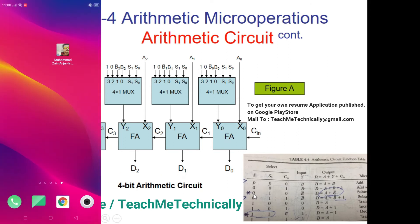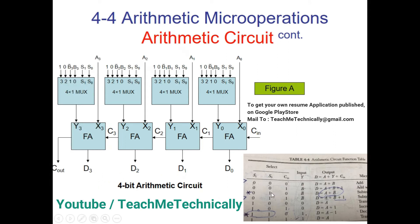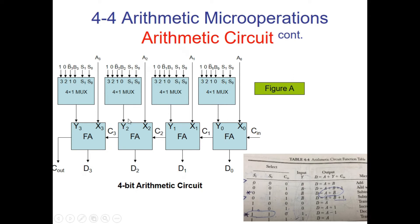Now take another example: selection bits are 0 1 and carry input is 0. For selection 0 1, the MUX passes the complemented value of B — B0 complement, B1 complement, B2 complement, and B3 complement — with carry in 0. So the full adder computes A plus B complement.